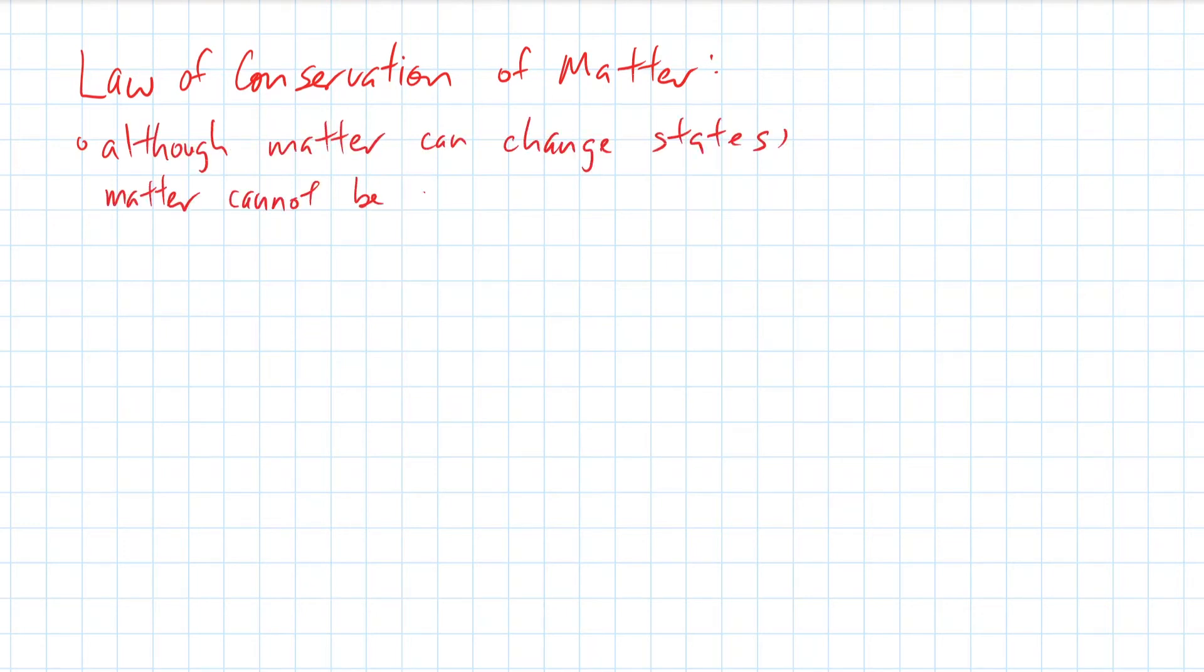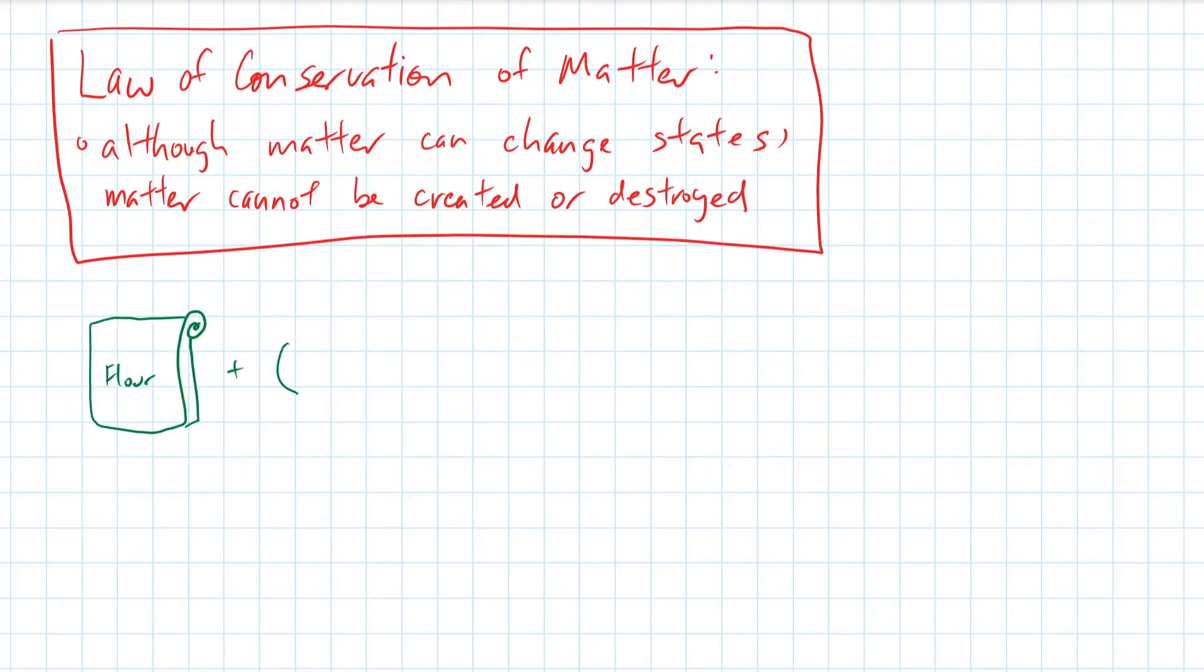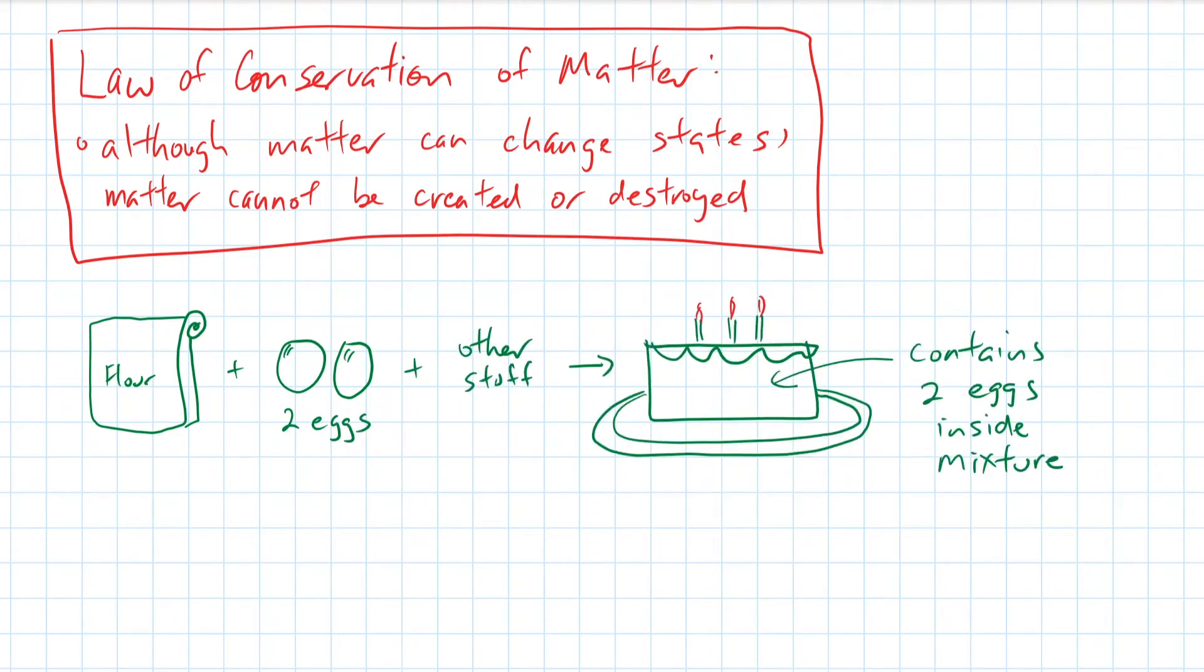The foundation of a chemical reaction relies upon the law of conservation of matter. Although matter can change states, it cannot be created or destroyed. In a chemical reaction, the total mass of the reactants always equals the total mass of the products. For example, if a simple cake recipe requires 2 large eggs as part of its ingredients, you know the whole cake will contain a total of 2 eggs after it's done baking.